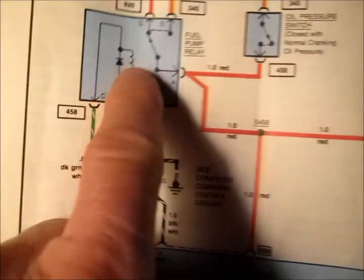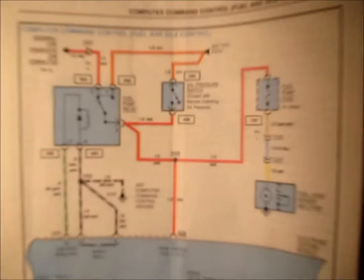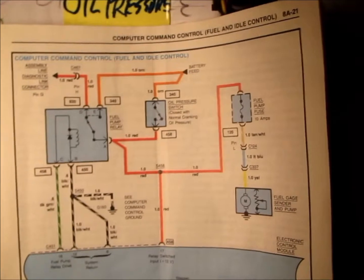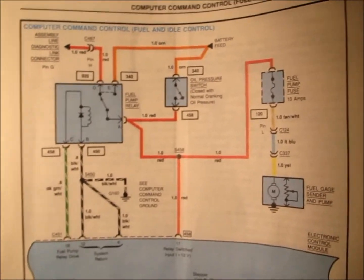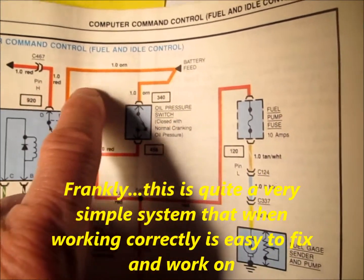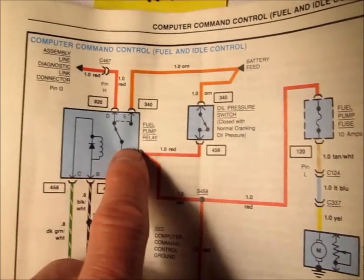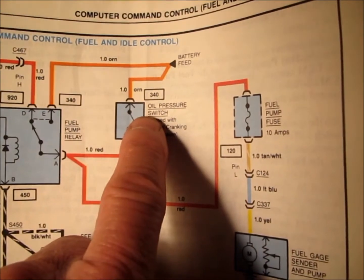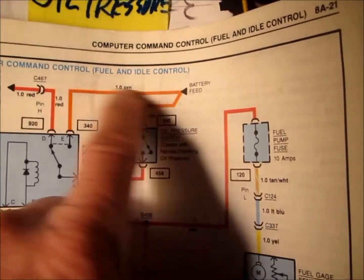This is the wiring diagram for the fuel control system. Right off the battery, straight off the battery, you'll see an orange wire that splits and it goes to the fuel pump relay and it goes to the oil pressure switch. It's an orange wire.